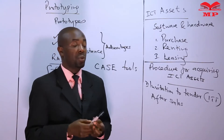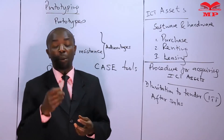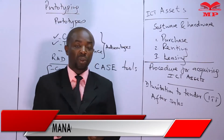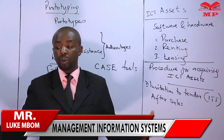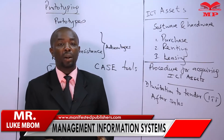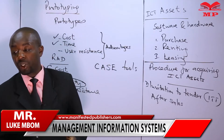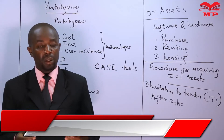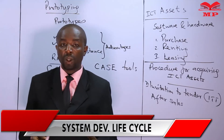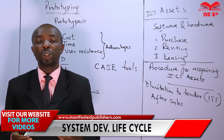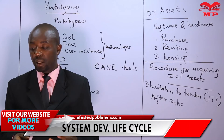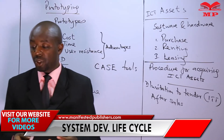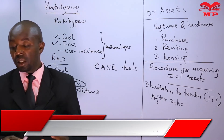Once we choose the appropriate supplier, we go to the fourth point: preparation of the tendering contract. We have already chosen the supplier and now we enter into a contract with them, specifying exactly what we want them to supply us with. That tells us about the acquisition of ICT assets.